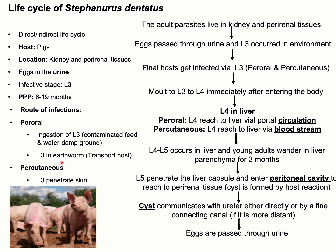If earthworms are involved in the life cycle, the final host is infected by ingesting earthworms containing L3. In the percutaneous route of infection, L3 penetrates the host skin. The adult male and female parasites live in the kidney and perirenal tissues. The female parasite lays eggs which pass through the urine. When eggs reach the environment they develop into L1, L2, and then L3. The infective L3 develops in the environment, and the final host becomes infected by ingesting contaminated food, water, or earthworms containing L3.